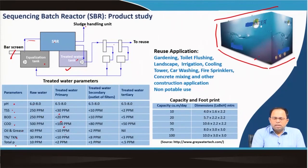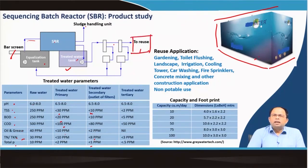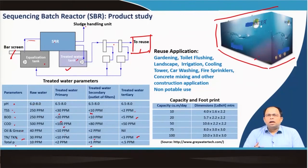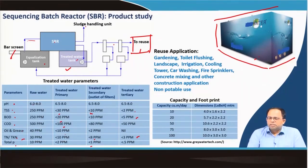After secondary filters, TSS reduces to less than 10 ppm and nitrogen to less than 8 ppm. With further tertiary treatment — adding a filter — TSS can be reduced to around 2 ppm, BOD less than 5 ppm, and nitrogen less than 3 ppm, which more or less meets discharge standards. This water can be reused for gardening, toilet flushing, landscape irrigation, cooling towers, car washing, cooling towers for air conditioners, fire sprinklers, concrete mixing, and other construction applications — mostly for non-potable use.